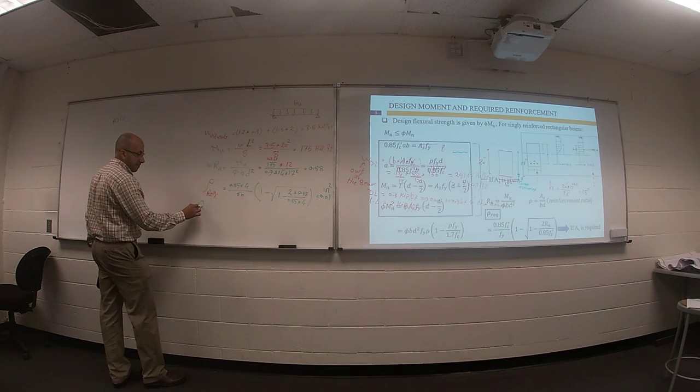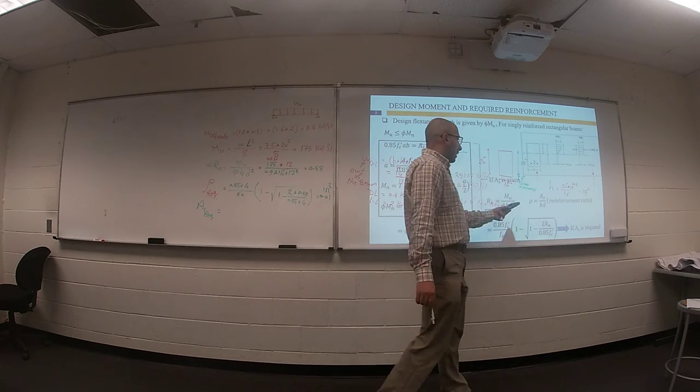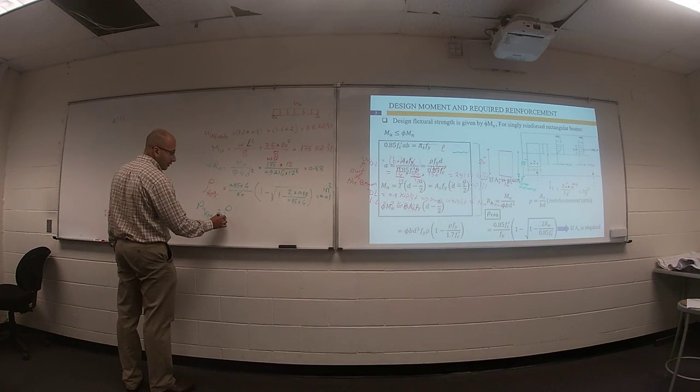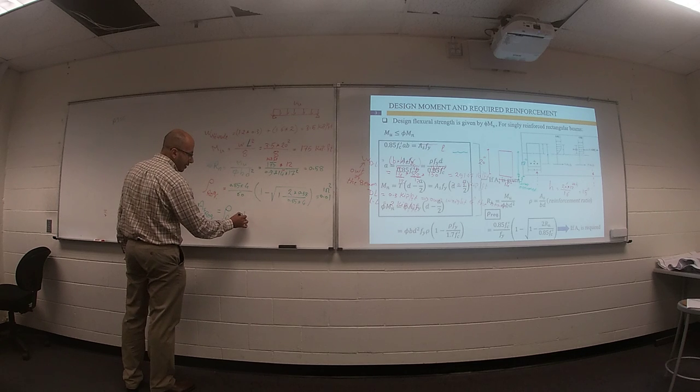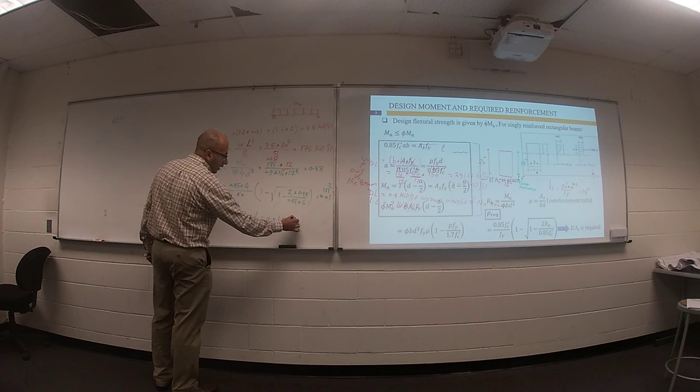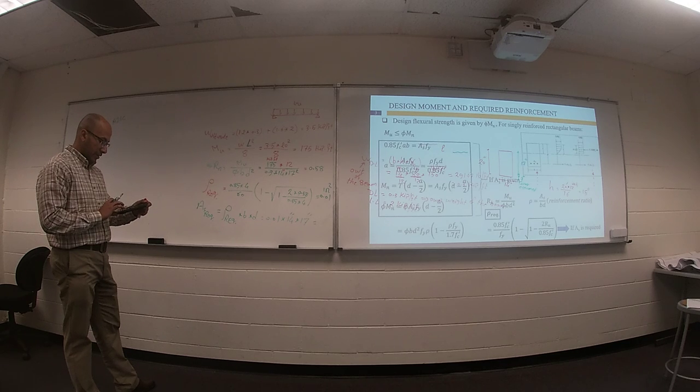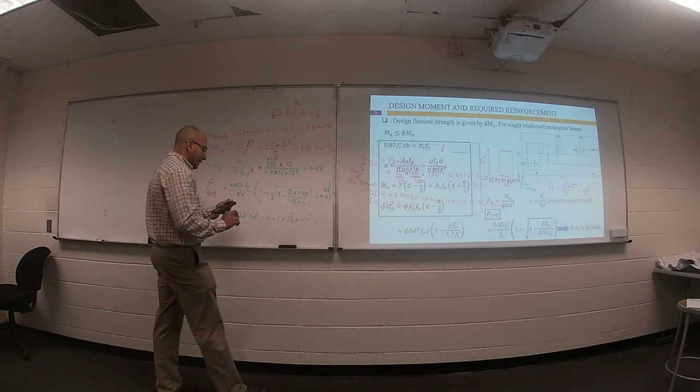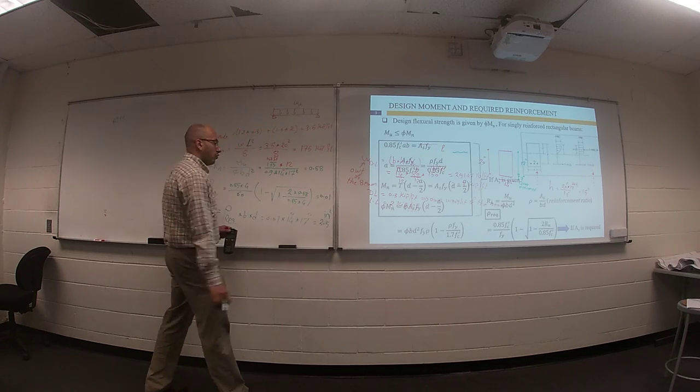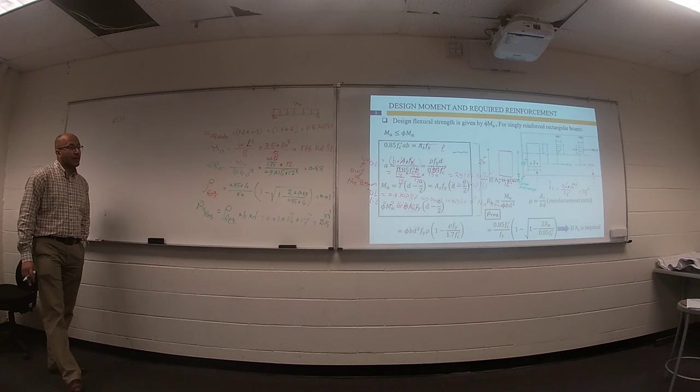So area steel required - rho equals area steel divided by BD, so area steel required will be rho required times B times D. So 0.01 times 14 times 17 inch-inch. So your area steel will be 2.5 inch squared. This one would be inch squared, 2.5 inch squared.